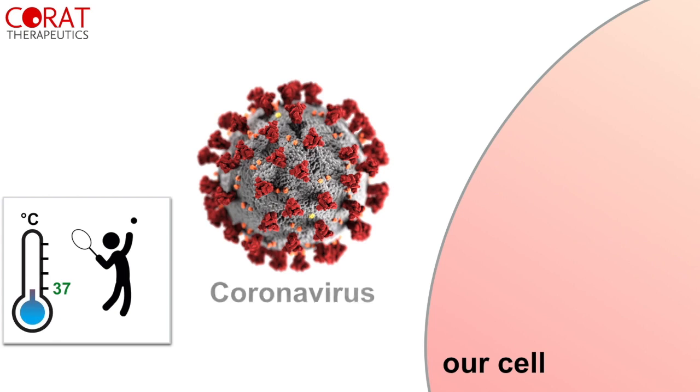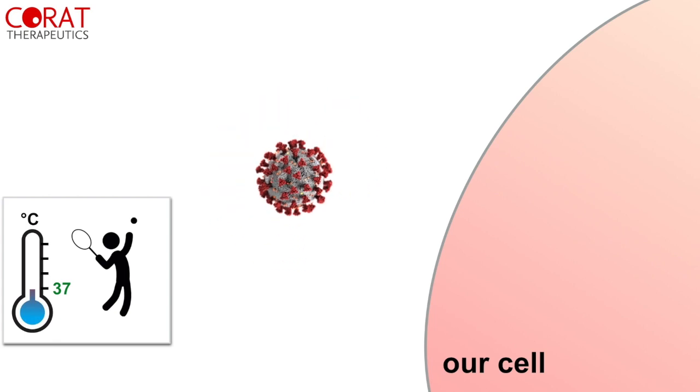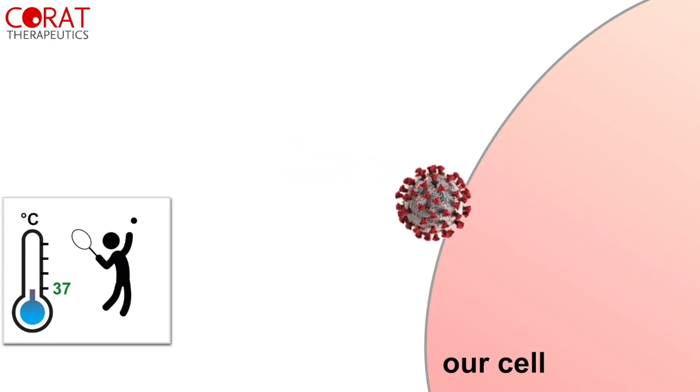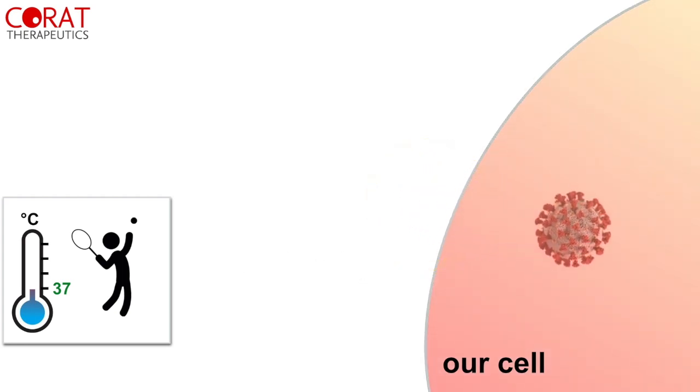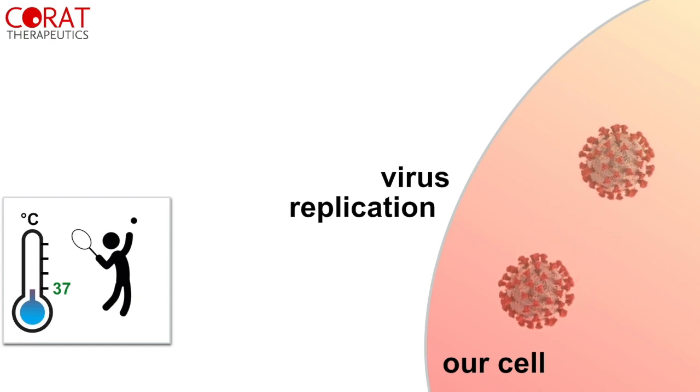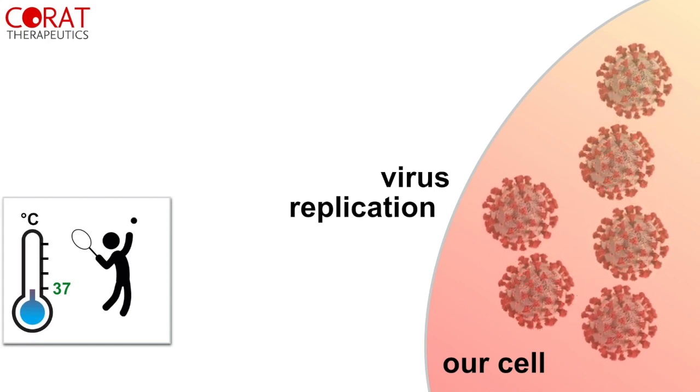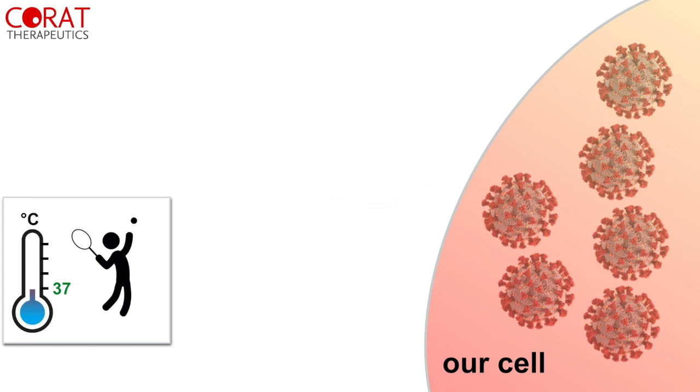So here's a coronavirus and to replicate in our body it needs to enter our cells. Here on the right side is a cell and the virus attaches to the membrane and enters the cell by penetrating this membrane. Then inside of the cell it can replicate and multiply and make copies of itself which can infect other cells and so on.